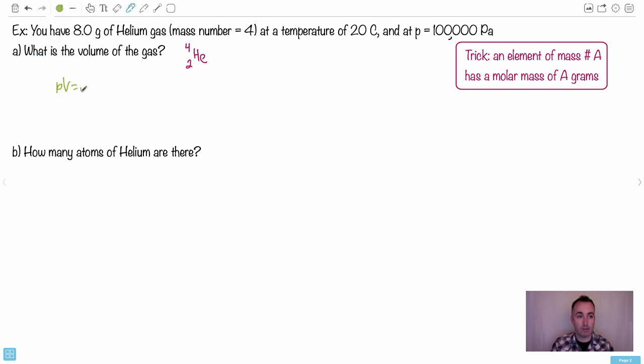Remember that one: pV equals nRT. You can look that one up if you need to. And from that, then we could get the volume pretty easily, right? V then equals nRT, and I would just divide by p. Awesome. Okay, here's the problem, though: I don't know n.